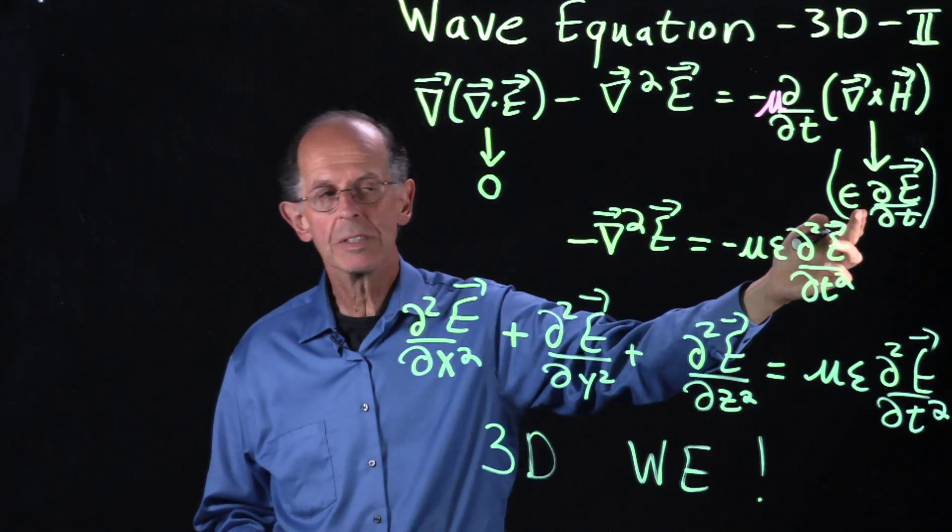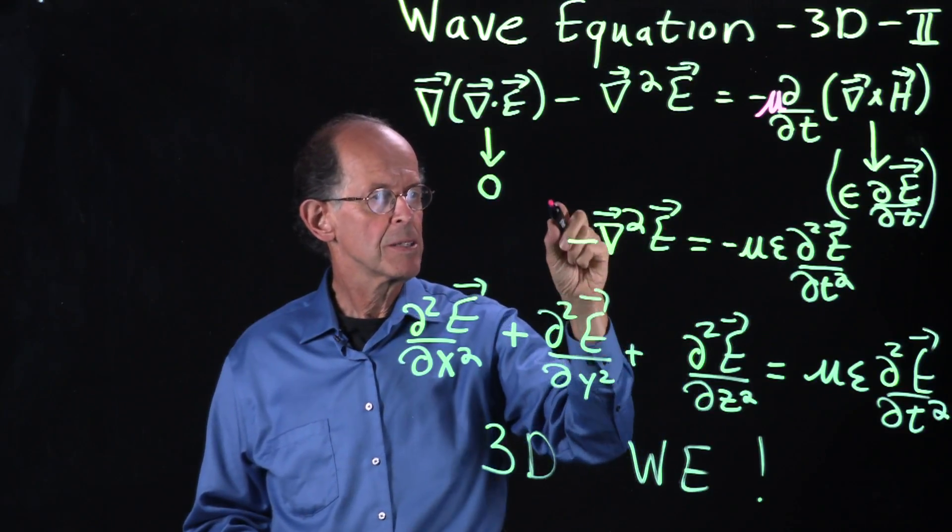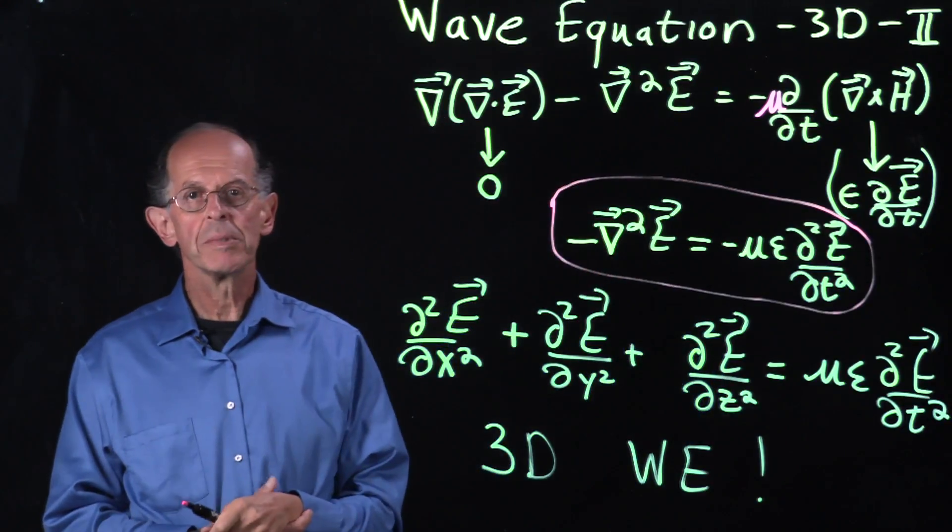Epsilon is a constant in time, so it comes out. And we have this as the final result of our manipulations.